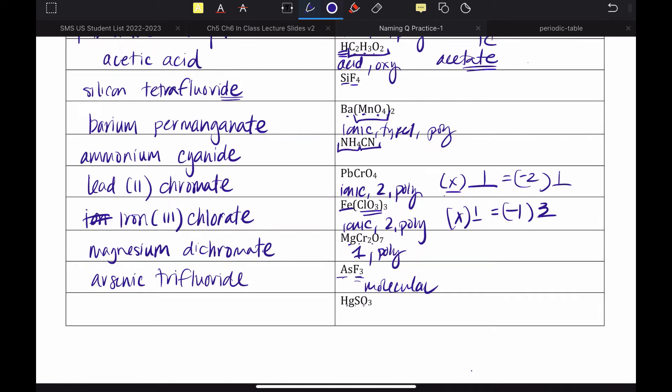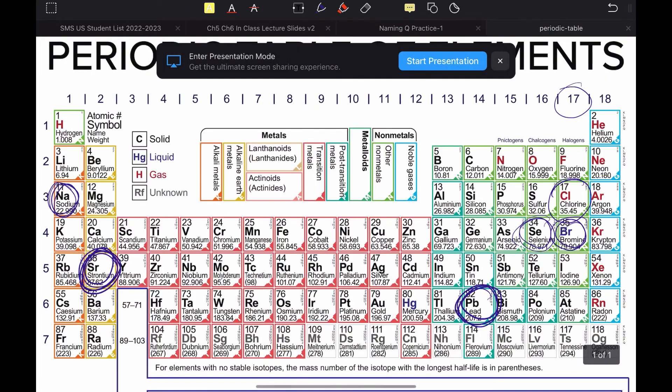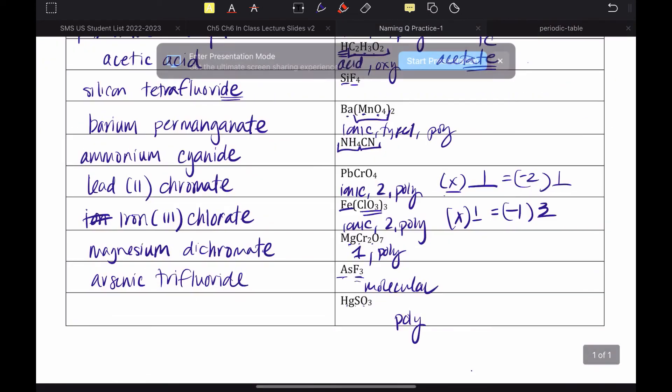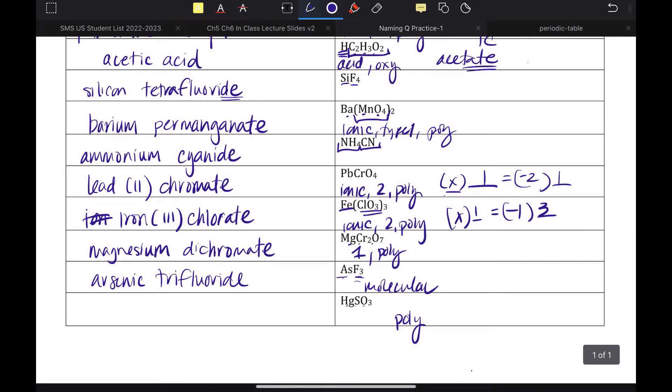Last one. So many elements must contain a poly. And we just need to figure out type 1 or type 2. We'd go find mercury. Indeed. That is a type 2. And so, we'd work backwards again. X, I have one of them. Sulfite has a charge of negative 2. And there's one of them. So, x must be 2. So, this is mercury(II) sulfite.